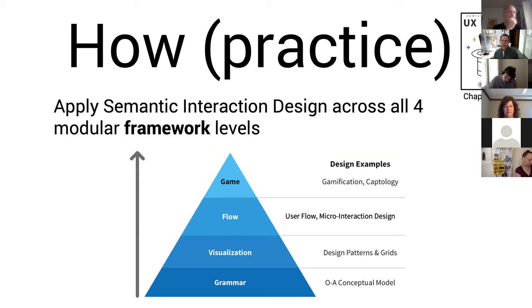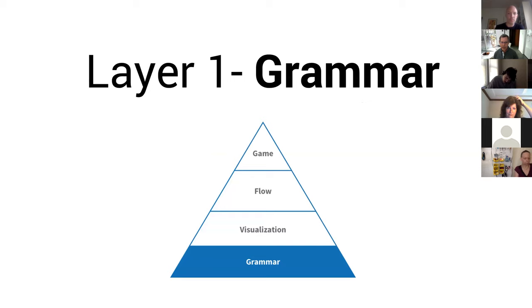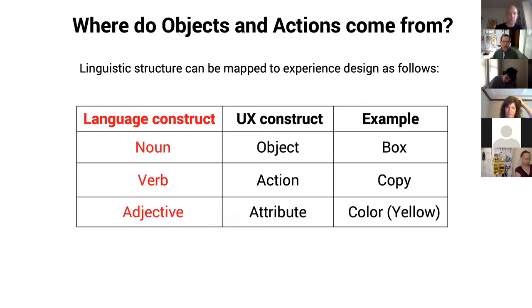That takes us to the design patterns and how to do this in practice — the different levels of grammar, visualization, flow, and game theory. Where do objects and actions come from? Dave Collins in his 1995 object UX book calls this 'foraging' — process foraging for nouns. Nouns basically turn into objects, verbs turn into actions, and adjectives in natural language turn into the attribute of an object. Very simple. There's a bit of a process: define your objects and actions, enumerate all the attributes for every object — which is basically the functional scope of the product — and then go through a prioritization process, because not all object-action pairs are equally important.